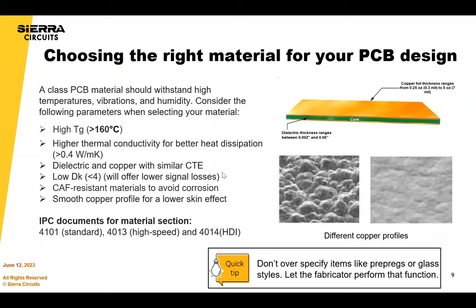Always start with choosing the right materials for your design — not just electrical properties, but physical properties as well. A key consideration is that some materials are more prone to micro fractures or wicking than others. If you have a space requirement, talk to your fabricator to find the material that will minimize wicking in the vias. These are some of the other key considerations for picking materials.